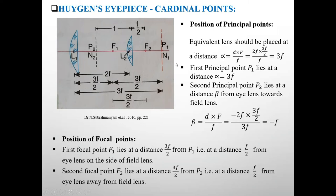Now see, equivalent lens should be placed at a distance alpha equals D times F prime upon F. This D is distance between two lenses that is 2F, and F prime is 3F by 2, upon F equals 3F. Means equivalent lens should be placed at a distance 3F.